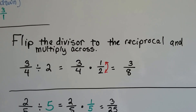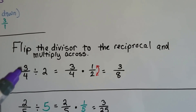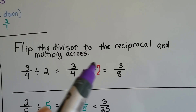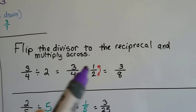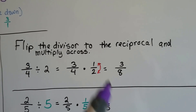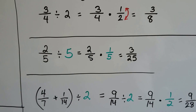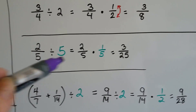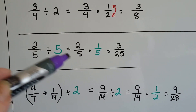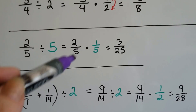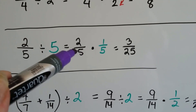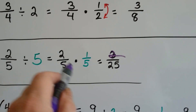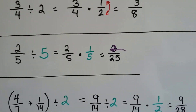Flip the divisor to the reciprocal and multiply across. 3 fourths divided by 2 becomes 3 fourths times a half — we flipped the 2 over 1 to a half. 3 times 1 is 3, and 4 times 2 is 8, so we have 3 eighths. For the next one: 2 fifths divided by 5. We put the 5 over a 1 to turn it into a fraction and then flip it to its reciprocal. 2 fifths divided by 5 becomes 2 fifths times 1 fifth. 2 times 1 is 2, and 5 times 5 is 25, so we have 2 twenty-fifths.